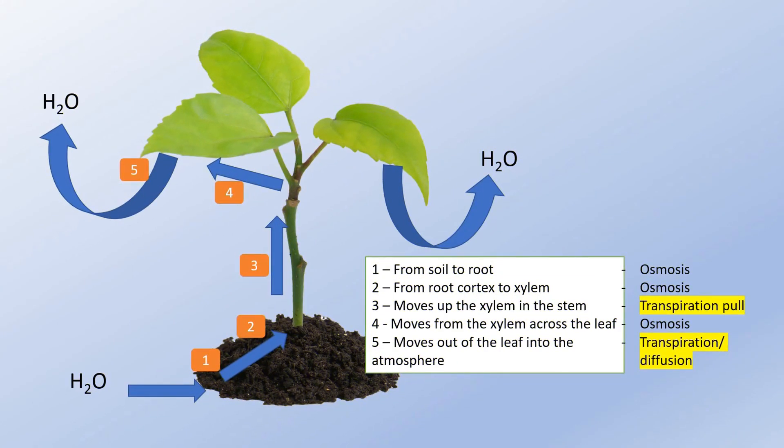There are different physical processes involved in the movement of water in plants. The primary processes are osmosis and transpiration pull. Transpiration pull, as the name implies, is a process whereby water is pulled up the stem to the leaves because of the loss of water at the leaves via transpiration.